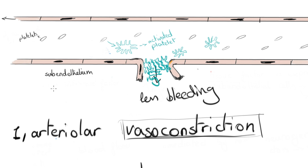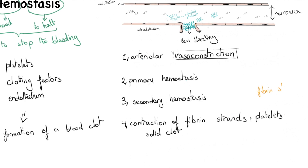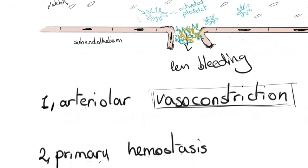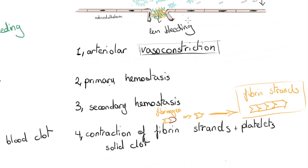The platelet plug alone is not enough because the platelets are not solid enough. We need fibrin strands to sort the platelets together and adhere all components. Since we don't have circulating fibrin in the blood, we have fibrinogen — a precursor of fibrin. Fibrinogen is converted into fibrin, and fibrin monomers polymerize into a fibrin strand that attaches to the platelets, forming a fibrin meshwork. This is secondary hemostasis.